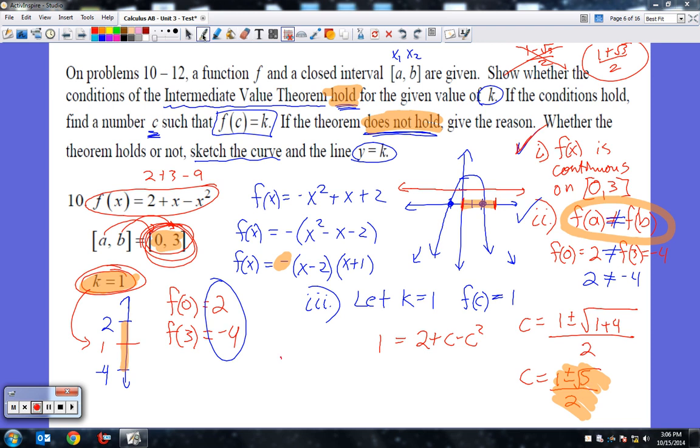We're going to put, therefore, there exists, the theorem holds. So let me write that down. The theorem holds, there exists c equals 1 plus root 5 over 2, which is basically between 0 and 3. There exists a c, which is this, that lies on the interval 0 to 3. And you would be done.